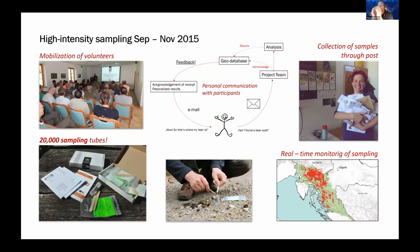We used citizen science and got a lot of volunteers — this was a huge logistics challenge to mobilize all these people and pull this off in such a short time over such a huge area. We ended up distributing 20,000 sampling tubes to the field and monitored sample collection in real time, with a lot of communication and organization.